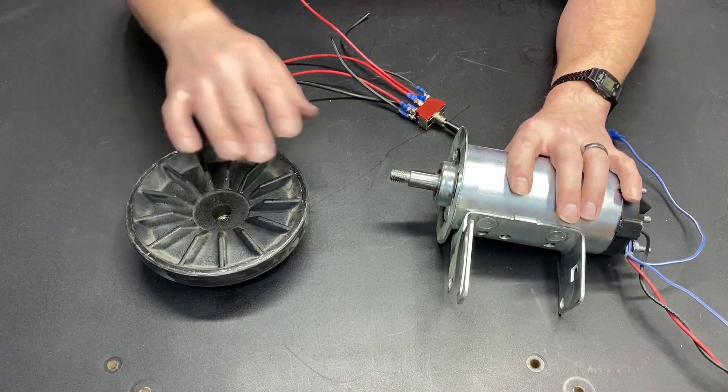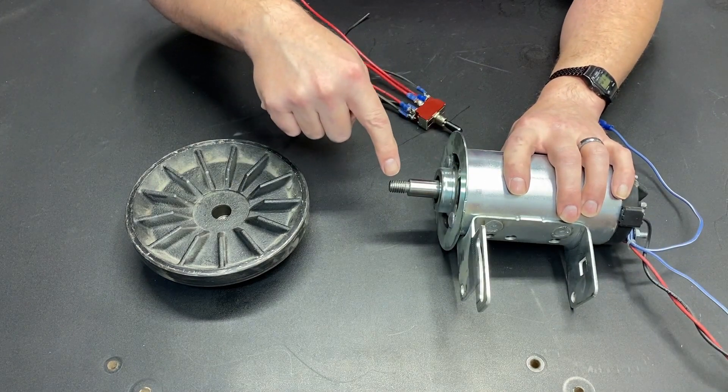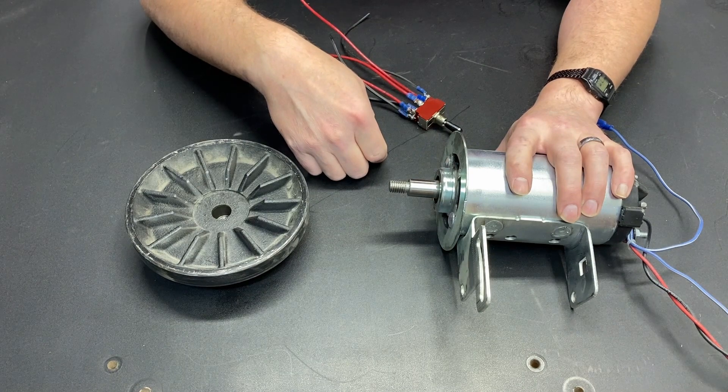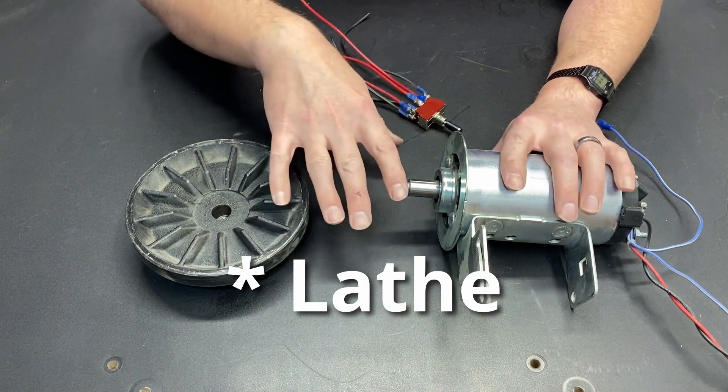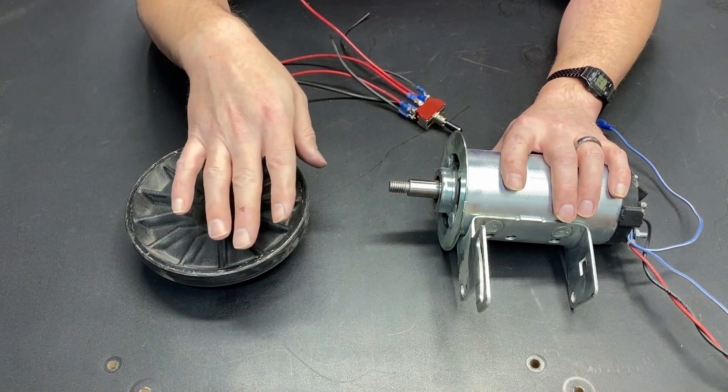The second thing that's really important in determining if you can run your motor in reverse is whether or not it's a thread-on shaft or if it's a keyway shaft. The motor that's being used on my mill has a keyway, so I can run it in either direction, no problem.